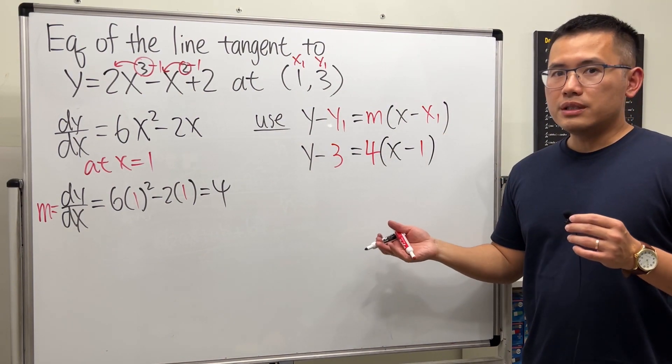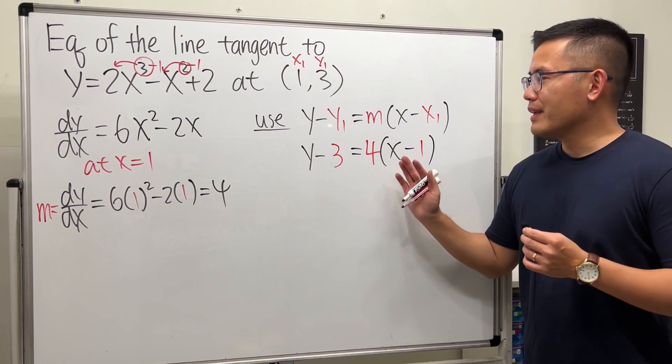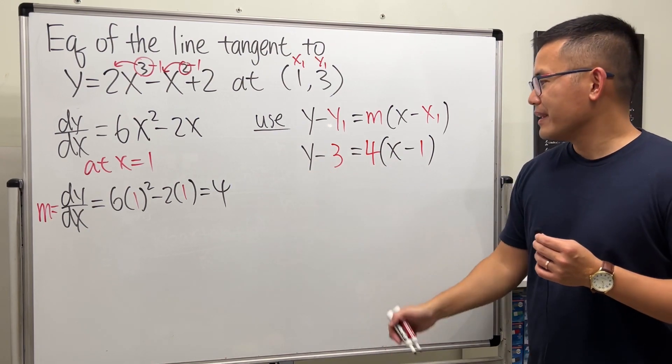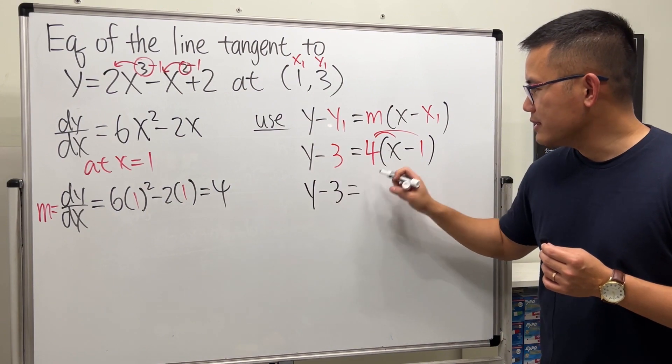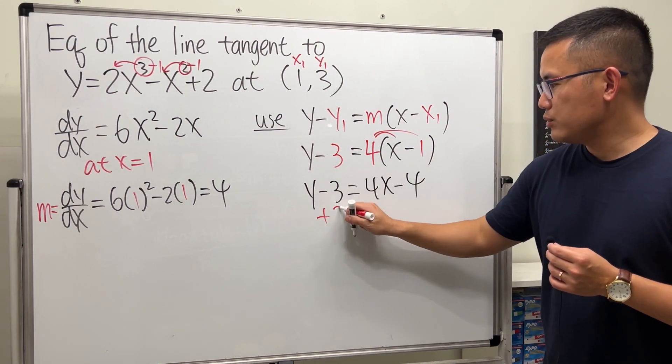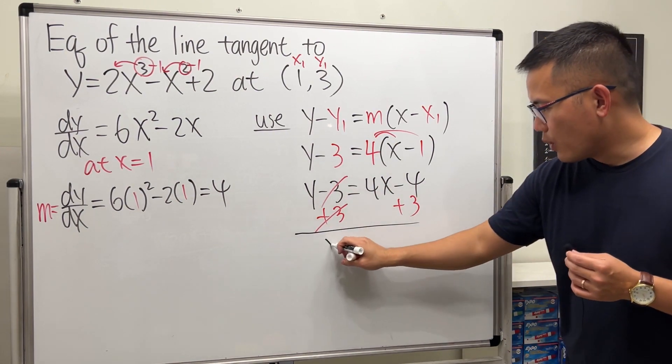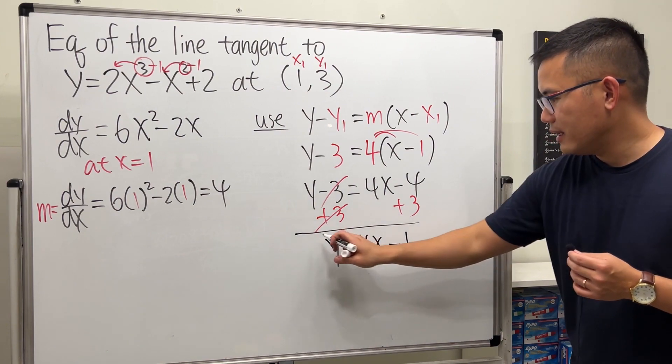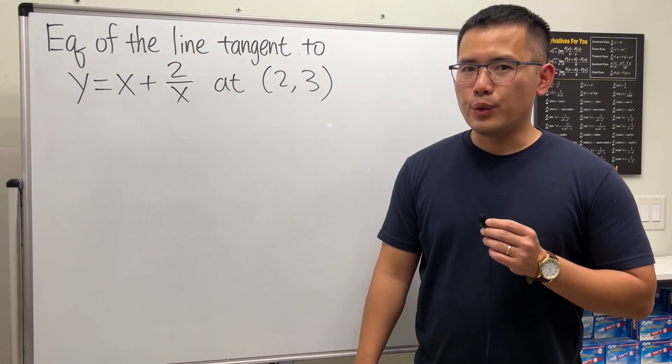That's pretty much it, but most of the time we prefer the equation in slope-intercept form—let's isolate y. Distribute: y - 3 = 4x - 4. Add 3 on both sides and we get y = 4x - 1. This is the final answer.